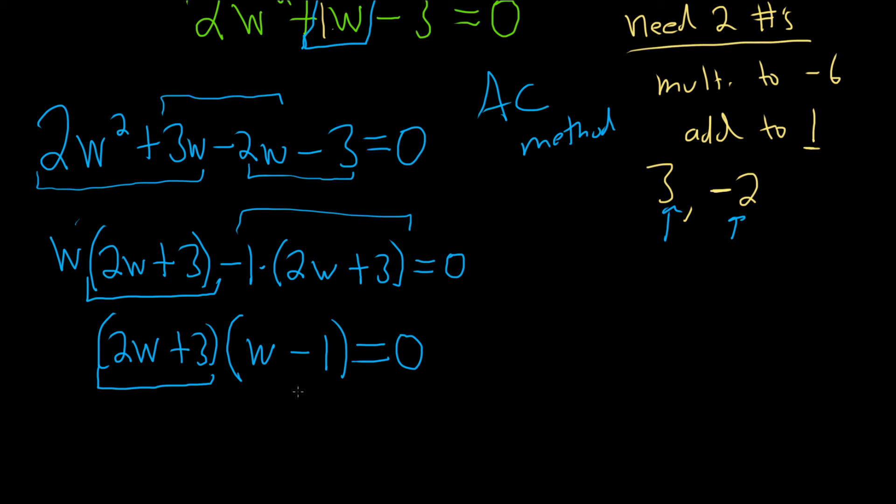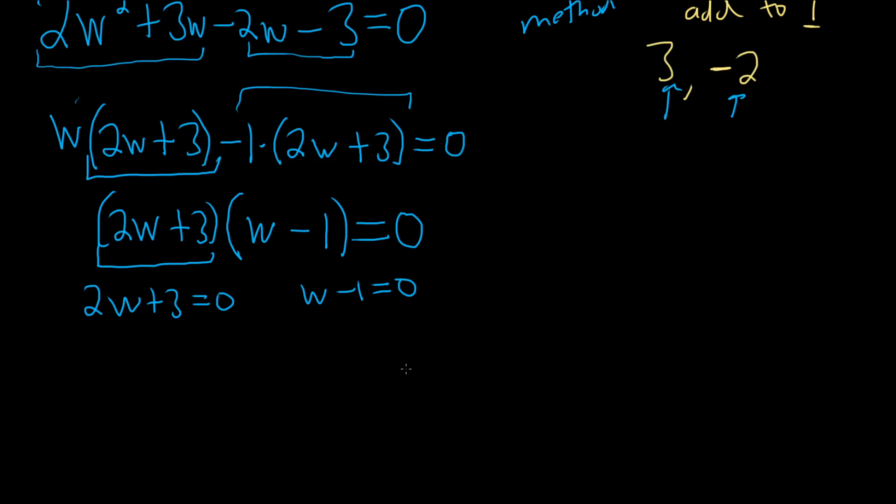We have a product equal to 0. So we set each factor equal to 0. All right. And to solve the first equation, we subtract 3, subtract 3. So 2W equals negative 3. And then just divide by the 2. So W is equal to negative 3 over 2. That's one of our answers in this problem. And over here, we add 1. And so W is equal to 1. And that would be the final answer.